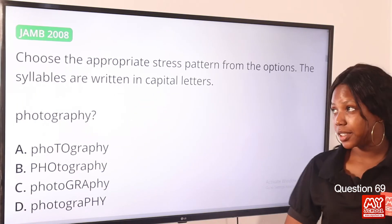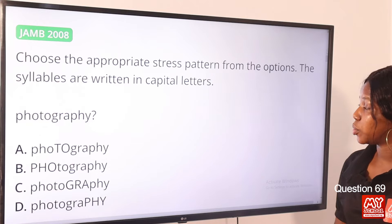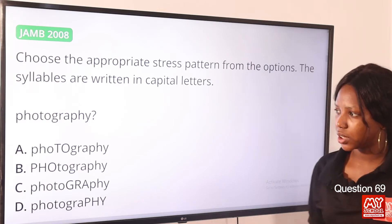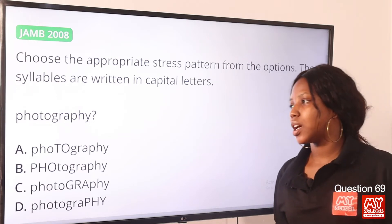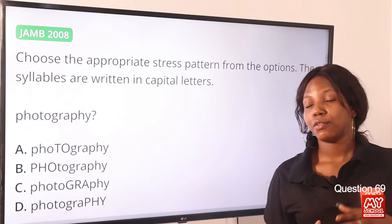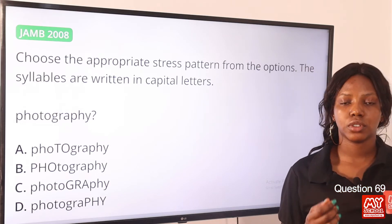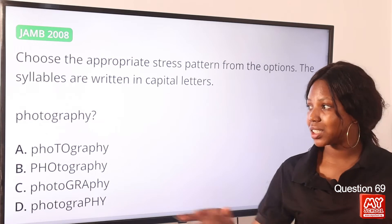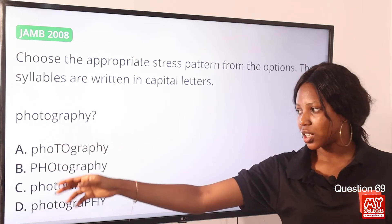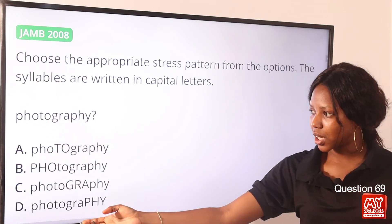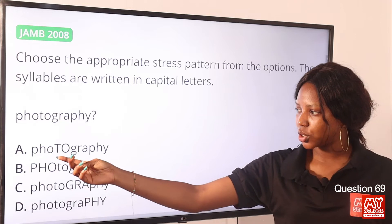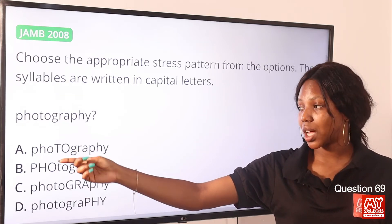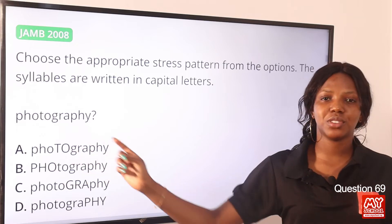Question 69. Choose the appropriate stress pattern from the options; the syllables are written in capital letters. The word is pronounced as photography. 'Toe' is stressed and it is the second syllable. Looking at the options, we can see that 'TOE' is written in capital letters in option A. So option A is the correct answer.